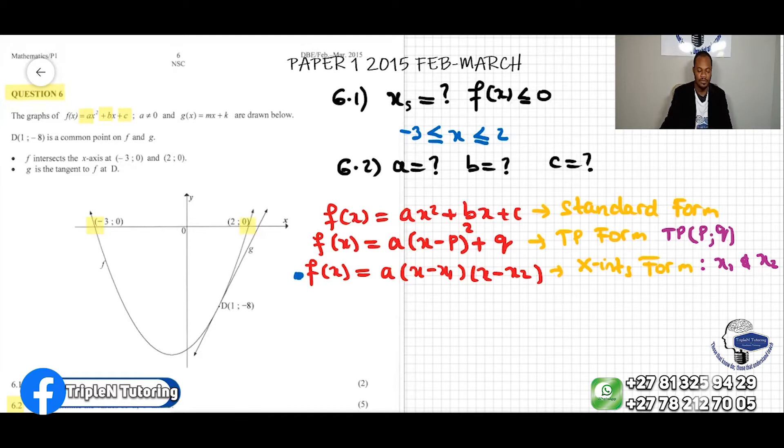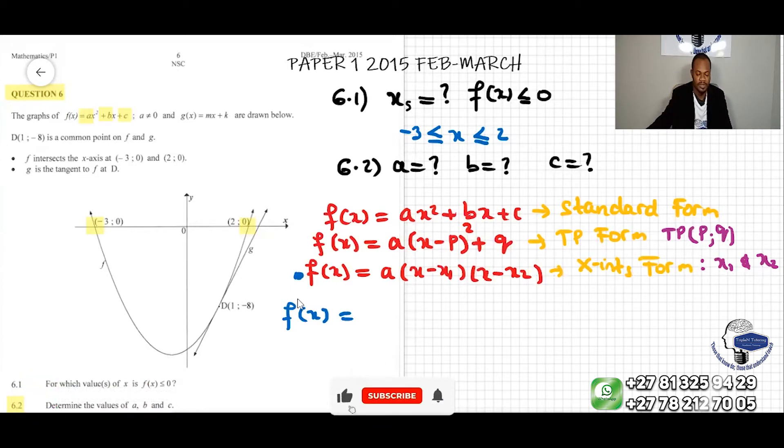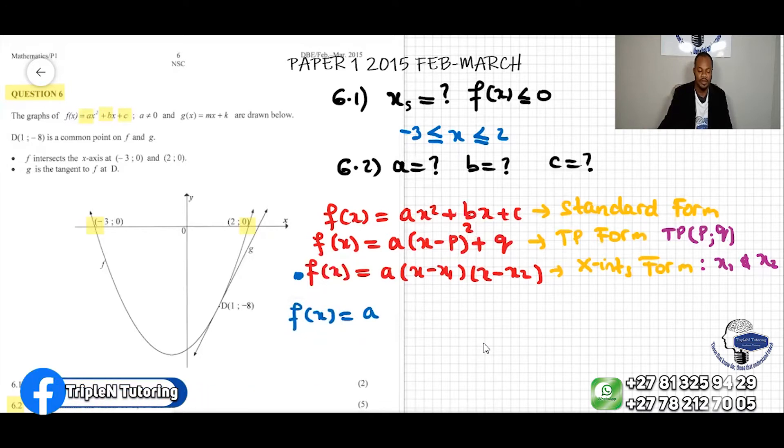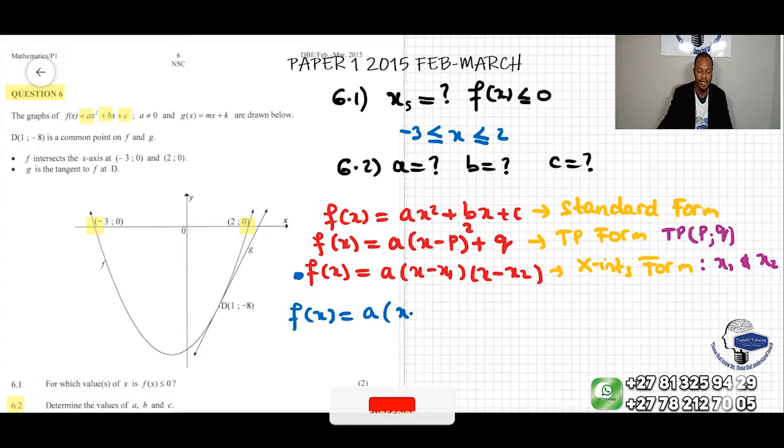I'm going to do f(x) will be equal to A times (x - x₁)(x - x₂).